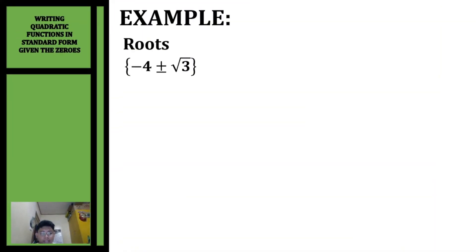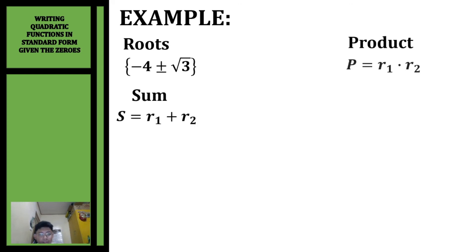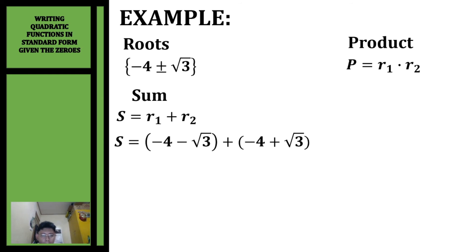Let's have another example. We're going to write the quadratic function given the roots negative 4 plus/minus the square root of 3. Our two roots are negative 4 plus √3 and negative 4 minus √3. For the sum: (negative 4 minus √3) plus (negative 4 plus √3). Combining like terms, negative √3 plus √3 equals zero, so the sum equals negative 8.